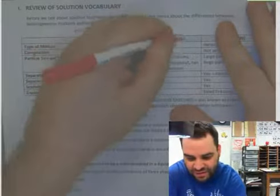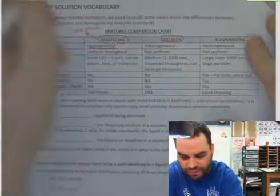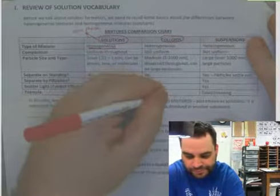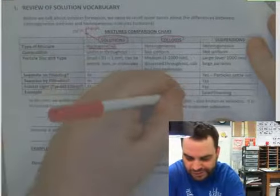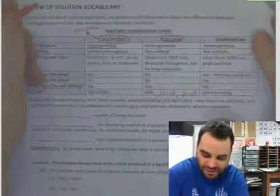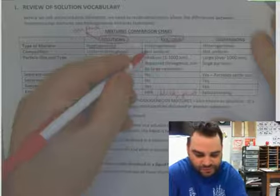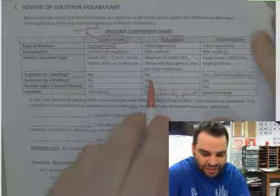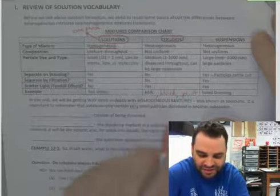Colloids. These are the heterogeneous mixtures that look homogeneous. An example would be blood or milk or paint. They look homo, but really they're hetero because the particles are a little bit bigger. These are not uniform. They do not separate on standing. They do not separate on filtering. But they do scatter light.